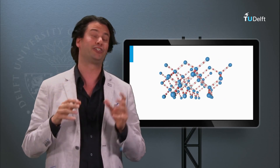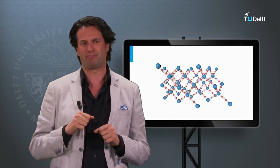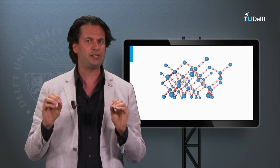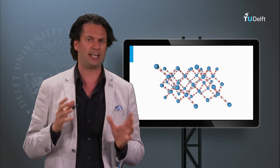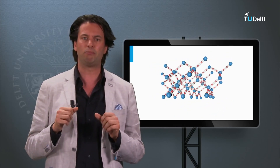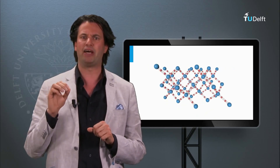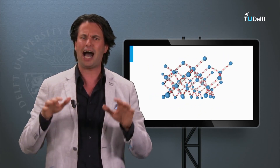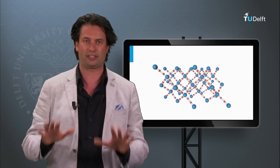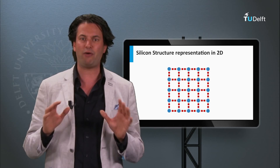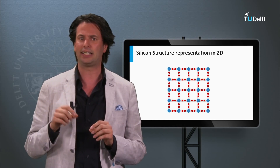We will use the semiconductor material silicon again as an example, and I will make a drastic simplification. The silicon network is a three-dimensional network as you can see in this animation. The blue spheres represent the silicon atoms and the red dots represent the valence electrons in the molecular orbitals forming the bonds with the neighboring atoms. To illustrate the behavior of charge carriers in the silicon lattice I will flatten the material and consider the silicon lattice to be a two-dimensional squared lattice. In this two-dimensional network every silicon atom has four bonds with its neighboring silicon atoms, like it has in the three-dimensional network.